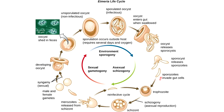The sporozoites then invade the gut cells. Once they invade the gut cells, they transform into the trophozoite stage, where they attach to the intestinal cells and steal nutrients from the host — they feed in this form. Eventually they form a schizont, which is where they perform their asexual reproduction, referred to as schizogony.